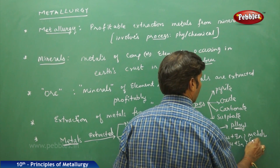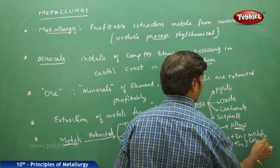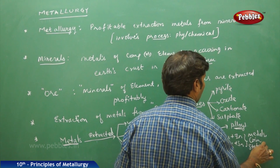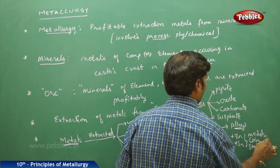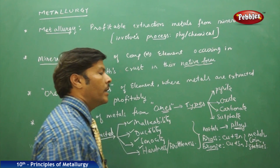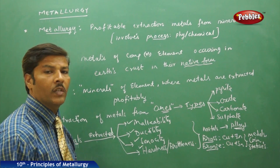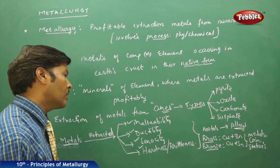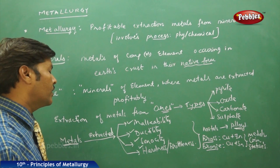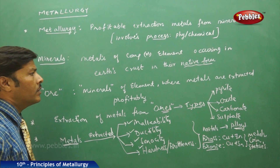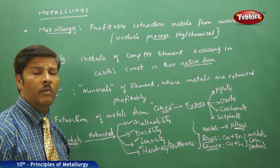Both brass and bronze are used in coins, statues, utensils, etc. These are the commercial applications of the alloys prepared from metals. This is a small introductory part in metallurgy.